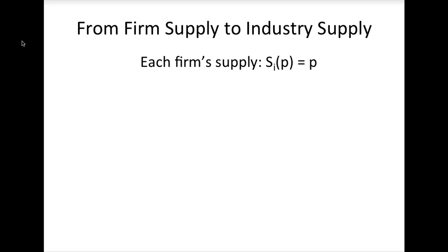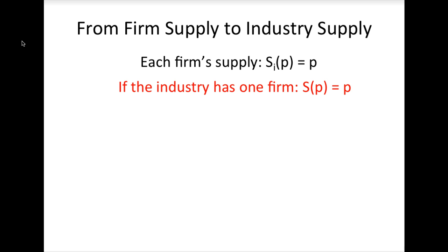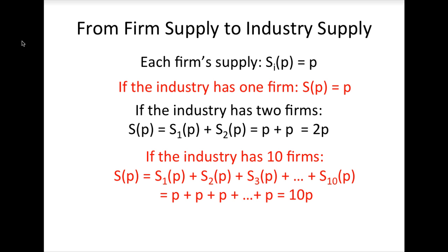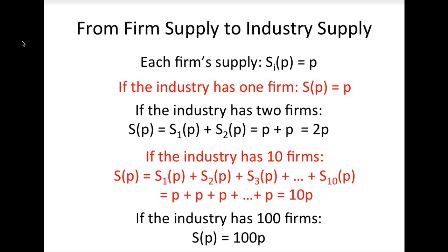If there is one firm in the market, then the industry supply is just this firm's supply equation, S of P equals P. If there are two firms, then we would add the supply of the first firm to the supply of the second firm, which gives us S of P equals 2P. If there are 10 firms, the industry supply would be S of P equals 10P. If there are 100 firms, the industry supply would be S of P equals 100P.